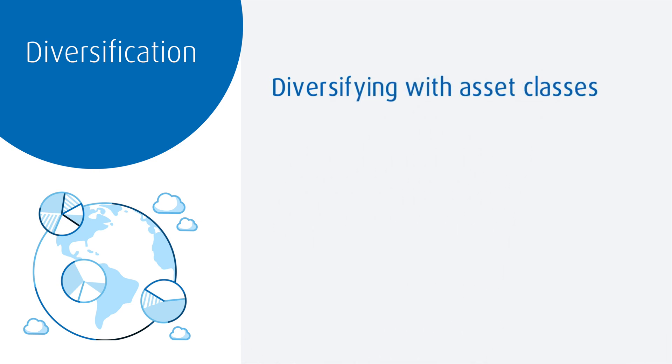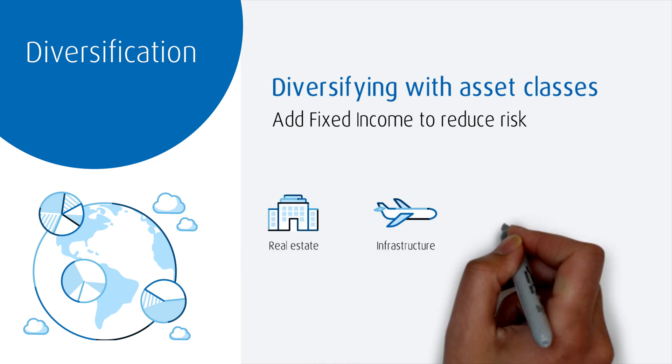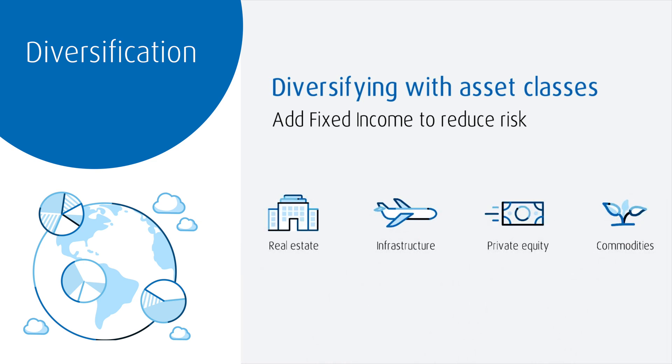Finally, another major way to diversify is through asset classes. Not everyone wants or needs a 100% equity portfolio — many investors might prefer less risk and so they add in other asset classes like fixed income. You could also diversify into real estate, infrastructure, private equity, commodities, and others. The goal is to get access to groups of investments that generally move in different patterns. Using various techniques of diversification can greatly reduce the risk in your portfolio.